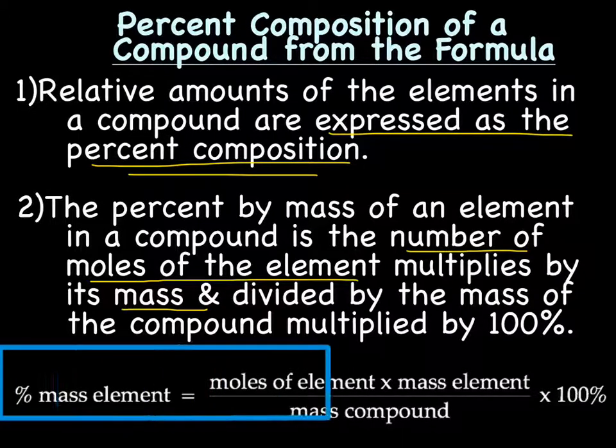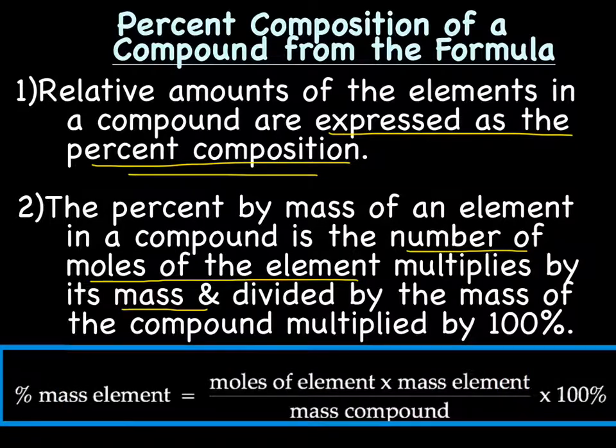That's in words. What I just boxed in is the actual formula. Percent mass of an element equals the moles of the element times the mass of the element divided by the mass of the compound multiplied by one hundred. This, if you would like, can go on your unit conversion table.